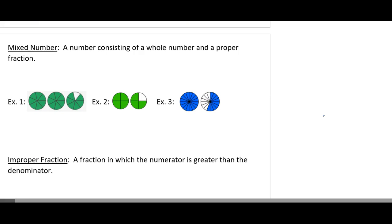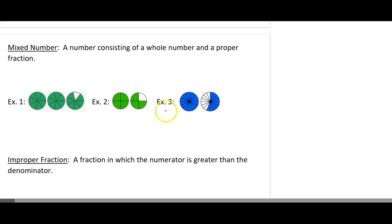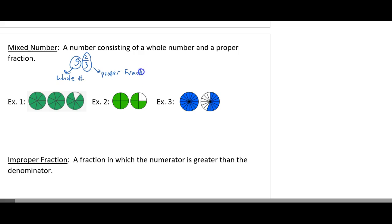Now, introduction to mixed numbers. A mixed number is a number consisting of a whole number and a proper fraction. So when I look at it, we would see something like 5 and then 2 thirds, where this 5 represents your whole number and 2 thirds is your proper fraction. A whole number is how many wholes you have. If you think of it as money, your dollars would be your whole amounts and your change would be your proper fraction.